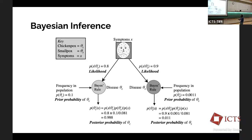Some mathematical notation: chickenpox is theta_c, smallpox is theta_s, symptoms are x. So theta is your hypothesis — it's just a mathematical way of representing things. Essentially, you use the symptoms in Bayes rule: theta_c given x, which is your data. The posterior probability of chickenpox is 98% — if you account for the prior probability of chickenpox, the posterior probability of smallpox is only 1%.